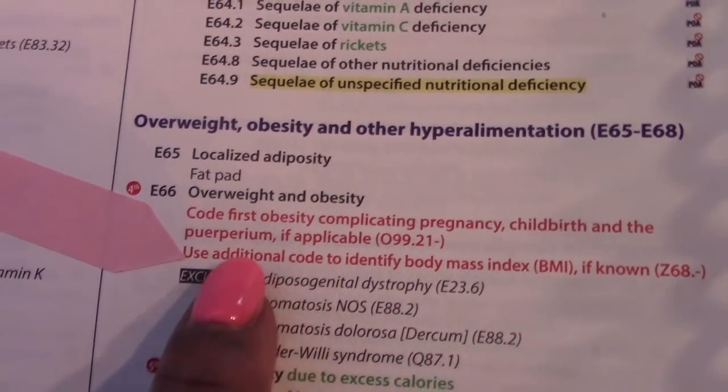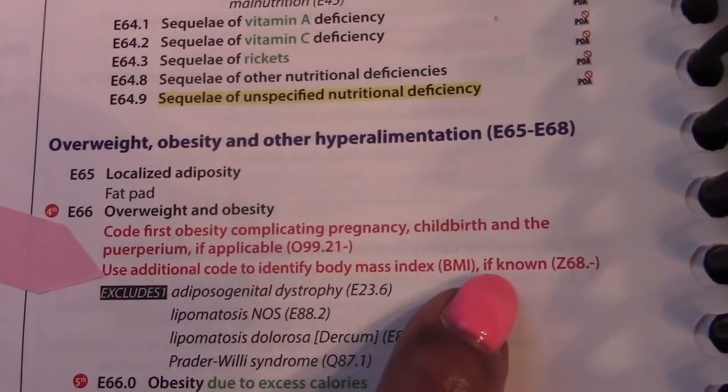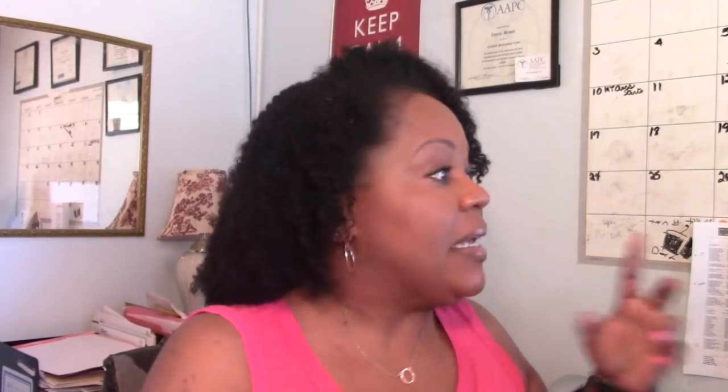For the obesity codes, at E66 — overweight and obesity — there's a note that says 'use additional code to identify body mass index, if known.' So you have notes in the code book that tell you to use these additional codes referred to in this guideline. Although Codemaster Coach always tells you to code based on what the physician documents, this guideline is telling you that you can code additional codes from licensed clinicians qualified to document this — and the code book itself tells you when to capture things like blood alcohol levels.